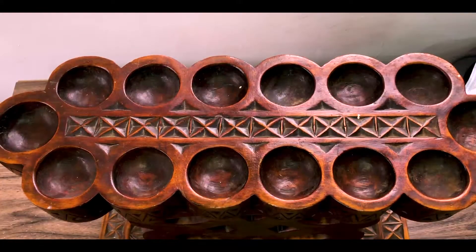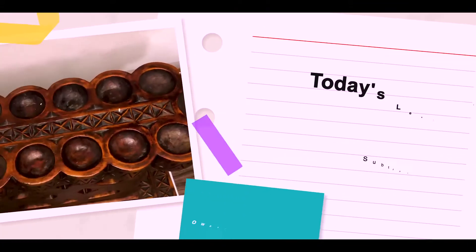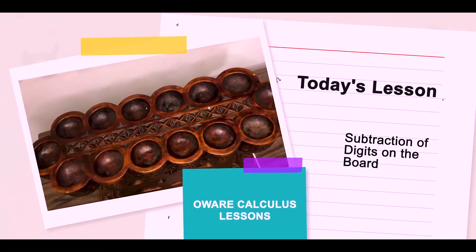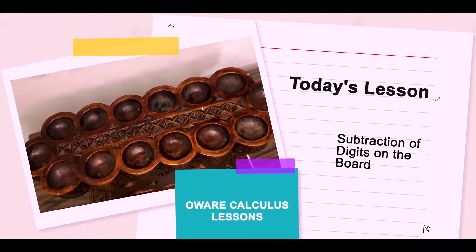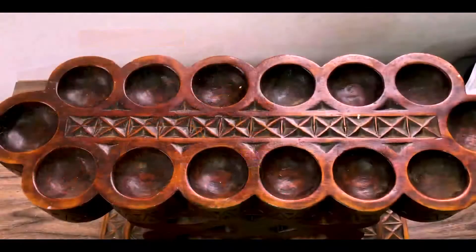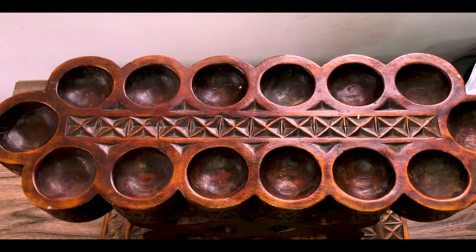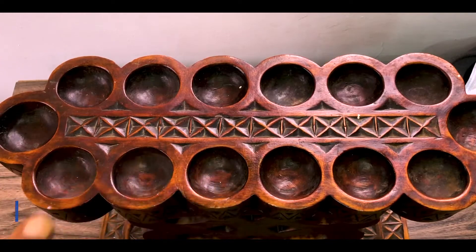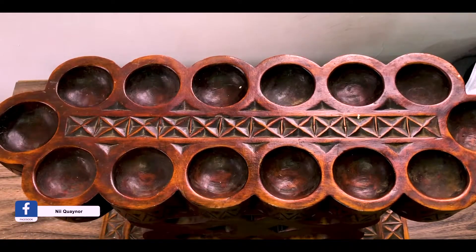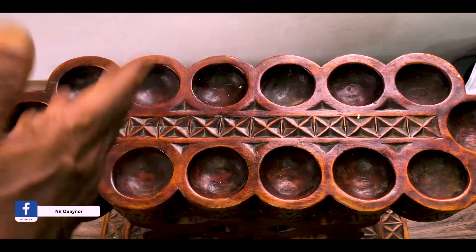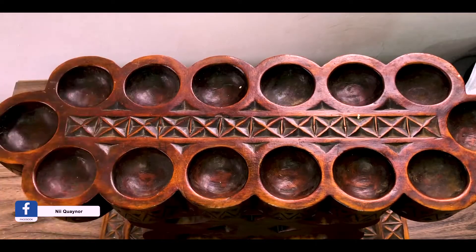Welcome to our calculus lesson. In this lesson I'm going to try to show you how to do subtractions with the abacus board. Remember that the board has two rows, so I can represent two numbers. By convention we keep the results of things we do in the second row, and that allows us to then load the first row to do another operation.